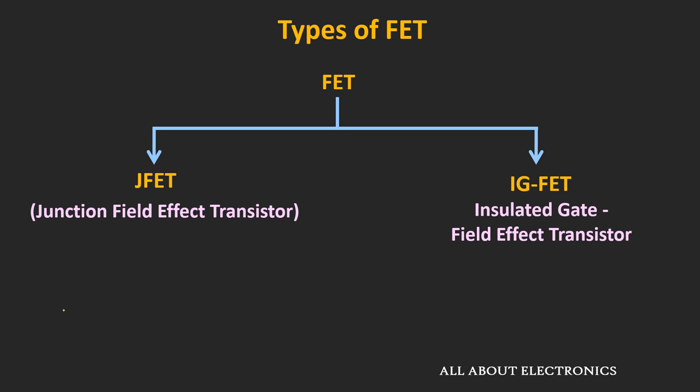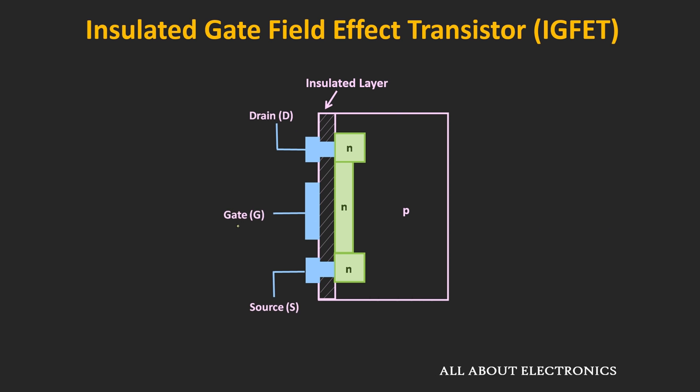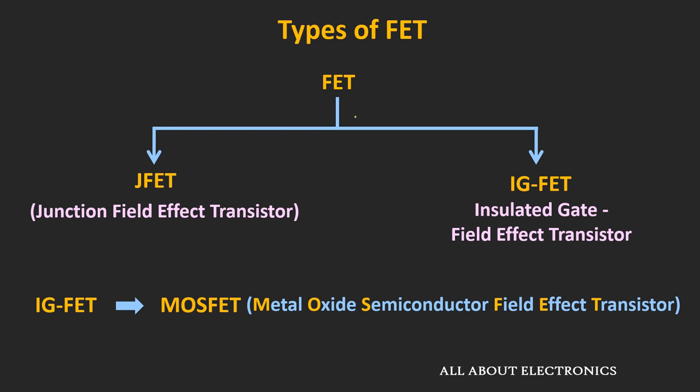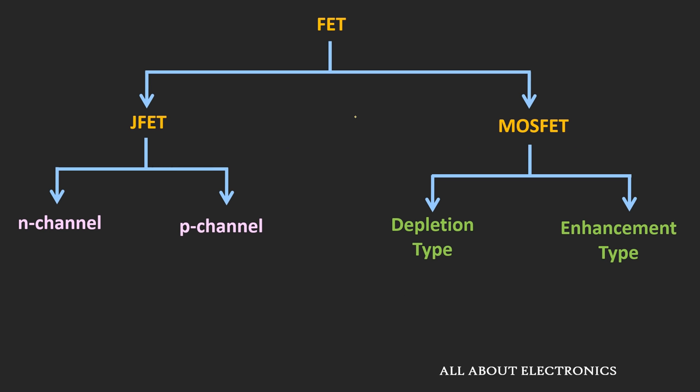This IGFET stands for insulated gate field effect transistor. In this IGFET, the gate terminal is isolated from the channel using an insulating layer. The MOSFET is the most common type of IGFET. This MOSFET stands for metal oxide semiconductor field effect transistor. And this MOSFET can be further classified as either depletion type or enhancement type of MOSFET.